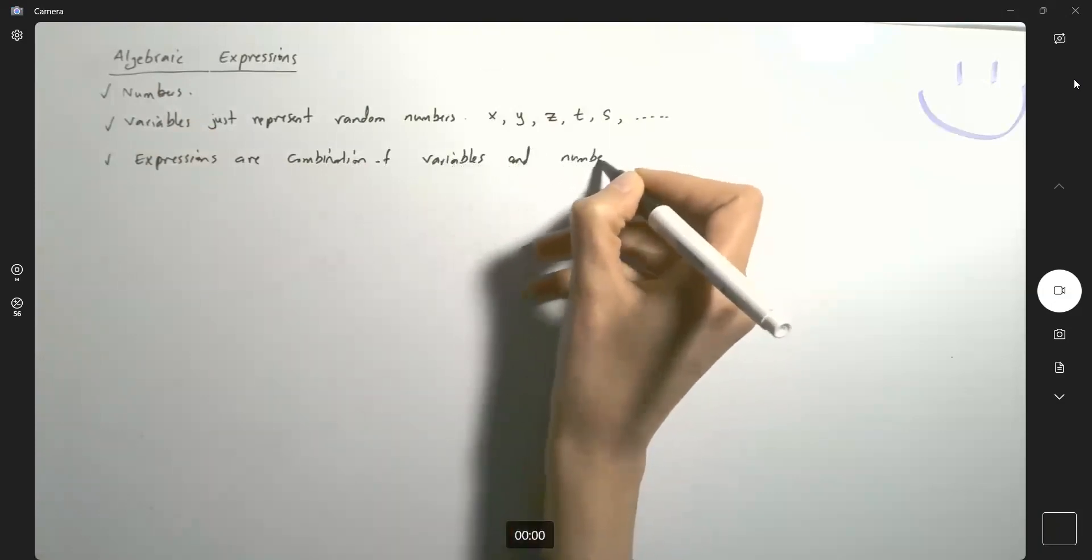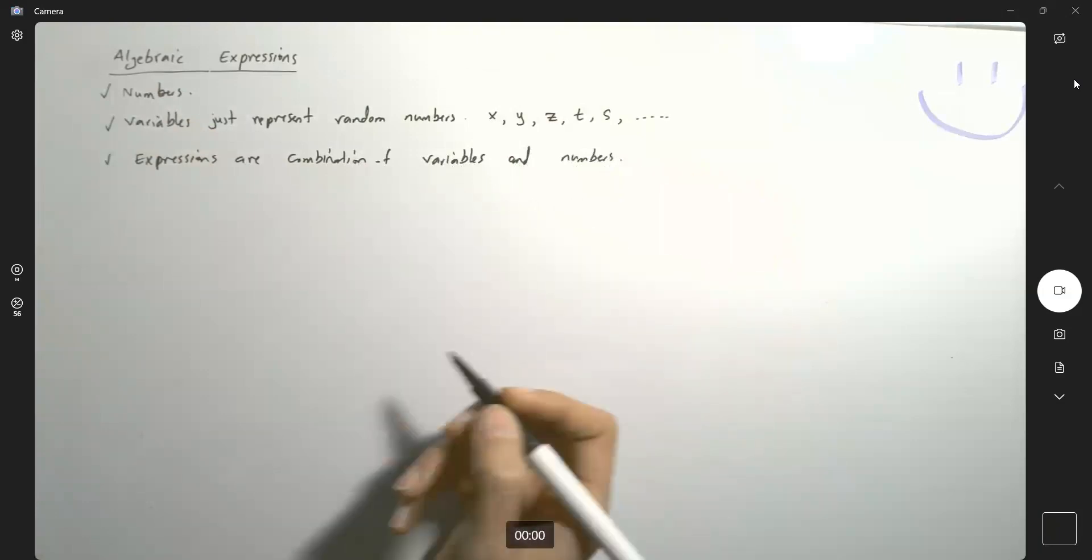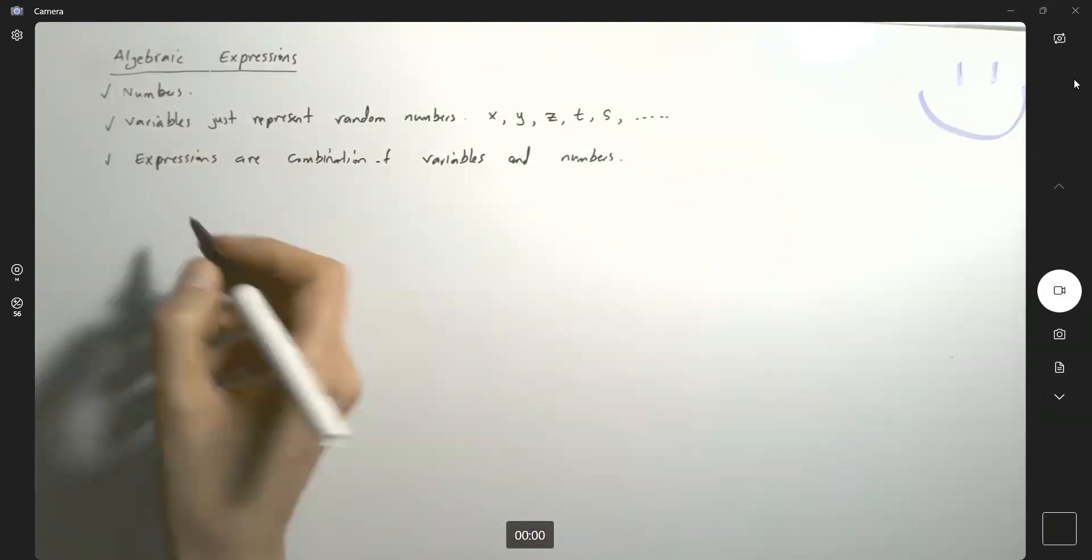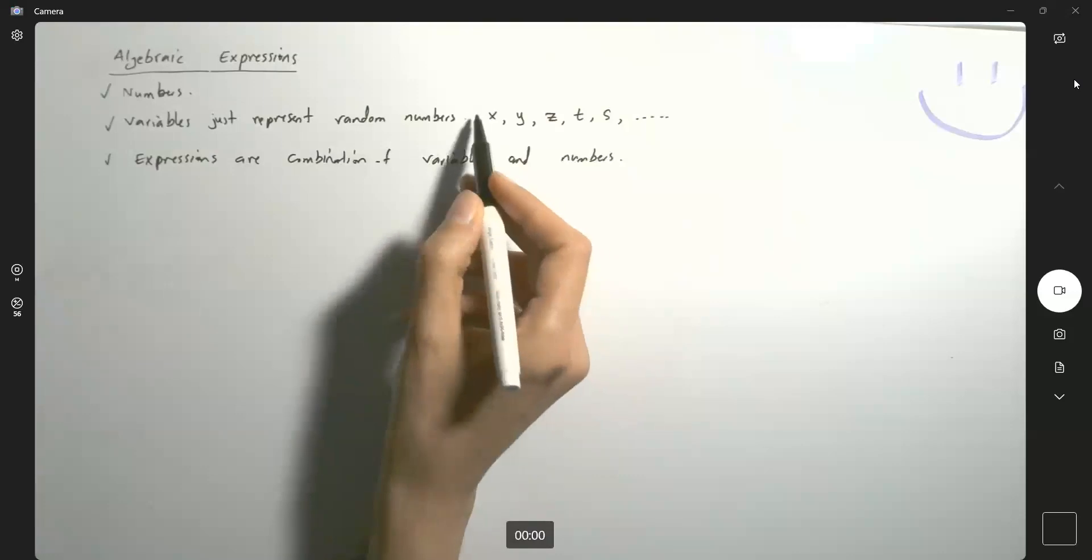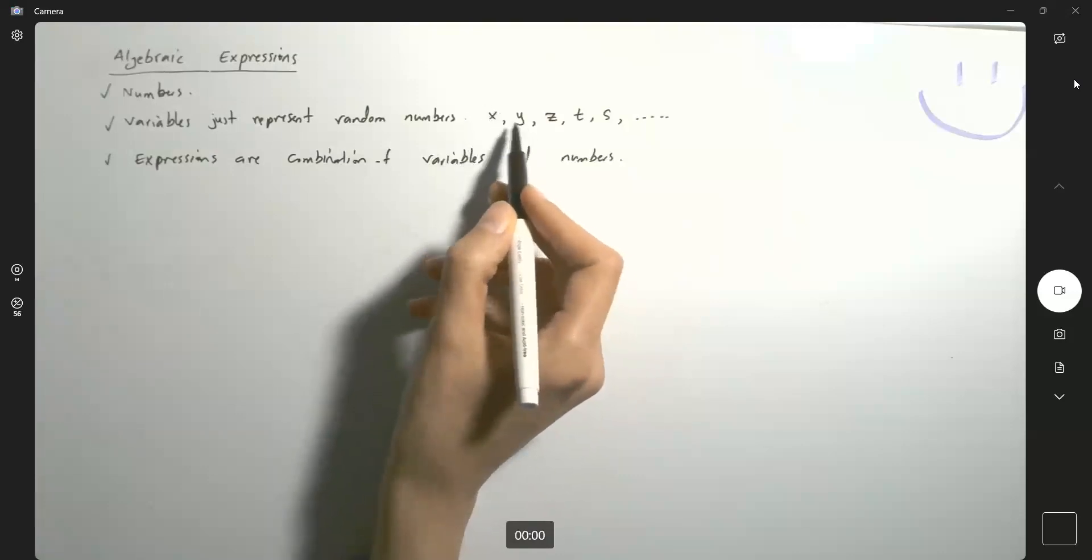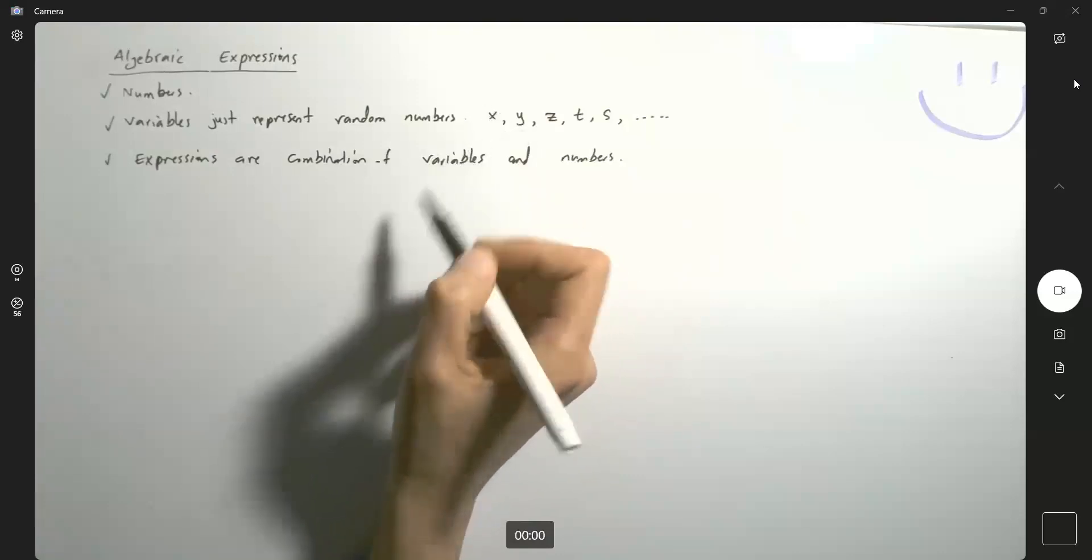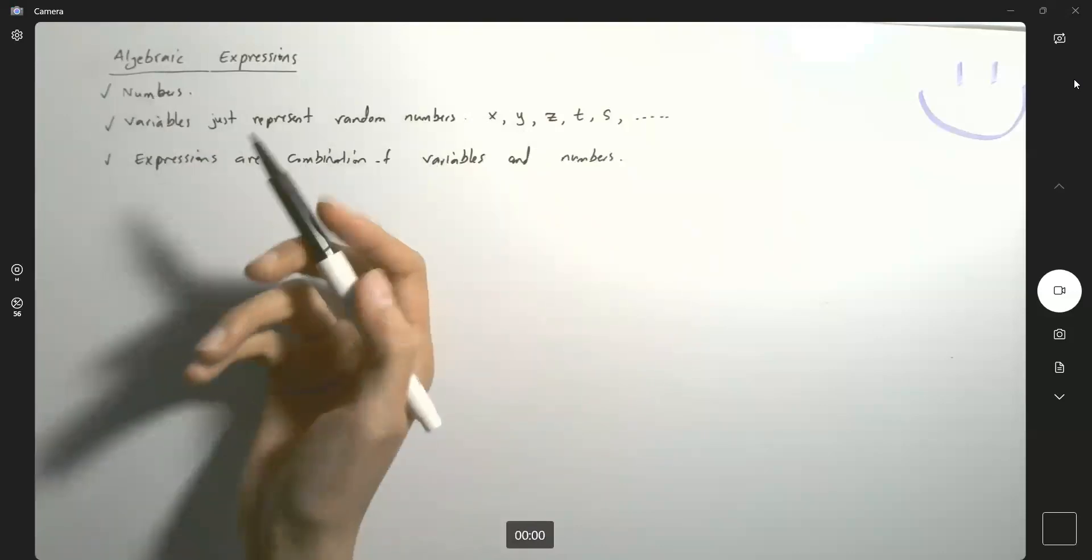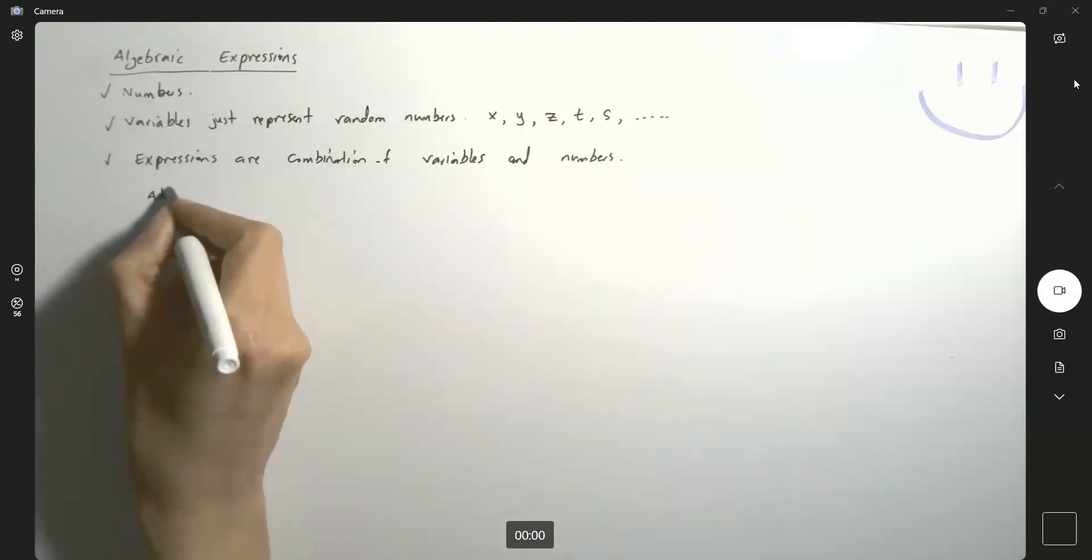It's not that difficult. Give us some example. Okay, sure. We can take variables and add them together. We can take variables and numbers and add them together. So the very first thing you can do is adding them. Addition or sum.